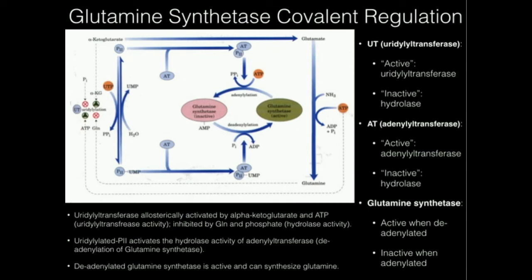So glutamine synthetase is regulated by adenylation, and protein P2 is regulated by uridylylation. But how do you regulate the uridylylation? It turns out that the uridylyltransferase is regulated very tightly. There are green signs (activating) and red signs (inactivating). High levels of alpha-ketoglutarate and ATP stimulate the uridylyltransferase, which through these mechanisms ultimately activates glutamine synthetase.